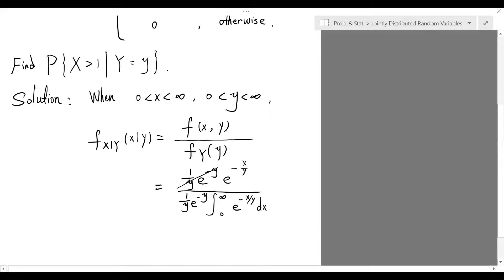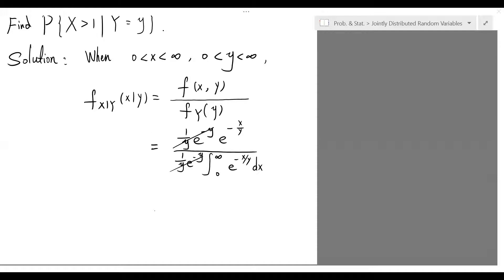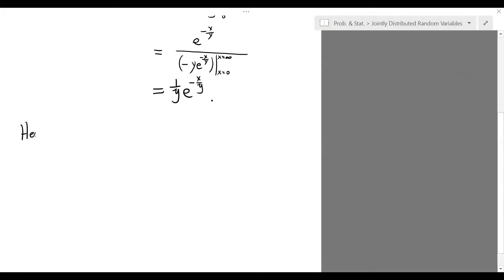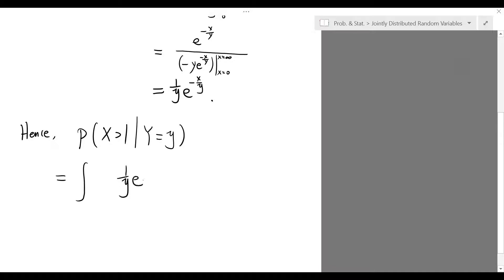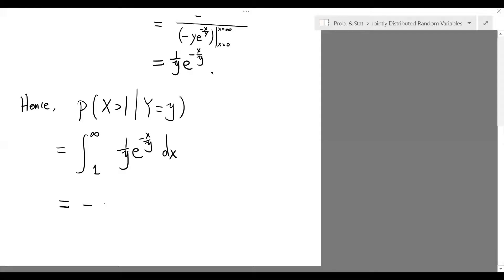We can cancel out the common terms in both the numerator and the denominator by finding the antiderivative. The integral gives us the final expression: 1 over y times e to the negative x over y. Hence, the conditional probability of X greater than 1 given Y equals y is simply the integral of this conditional density function from 1 to infinity with respect to x. Thus, we end up with e to the negative 1 over y as the answer.